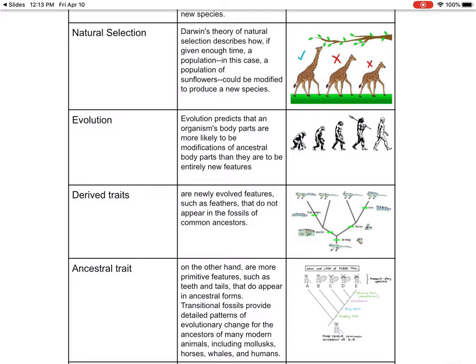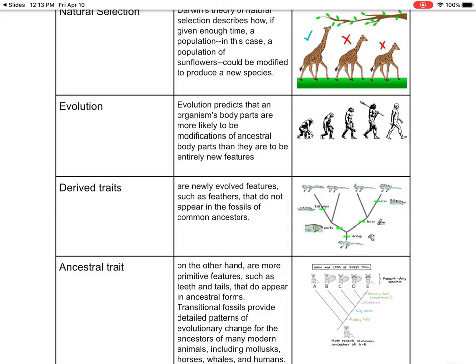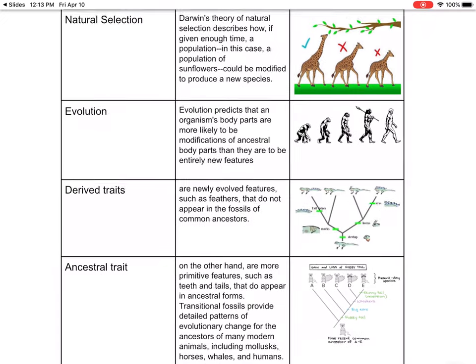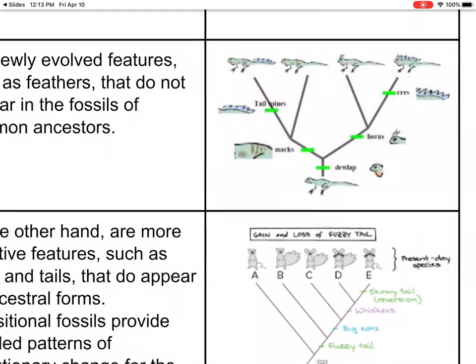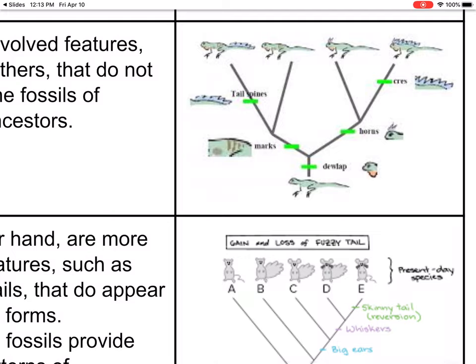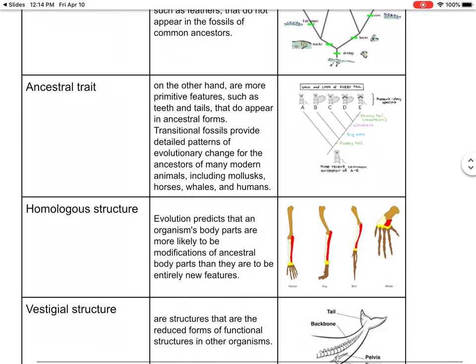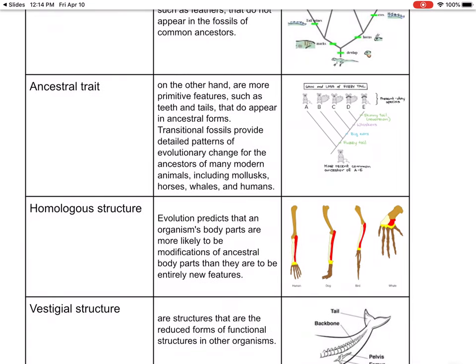Over time, things change, but it's not a matter of just coming out of nowhere. Derived traits are newly evolved features — such as feathers — that do not appear in the fossils of common ancestors. You can see that in the original form, over time, it developed scales or tail spines. Ancestral traits are more primitive, such as teeth and tails. Transitional fossils provide detailed patterns of evolutionary change.